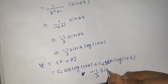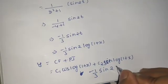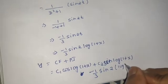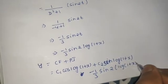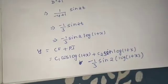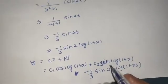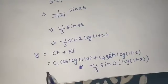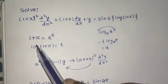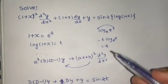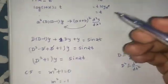...and plus your PI, which is -1/3 * sin(2*log(1+x)). So again, this is sin - I hope you can see this. So this is my final answer, y as CF plus PI.